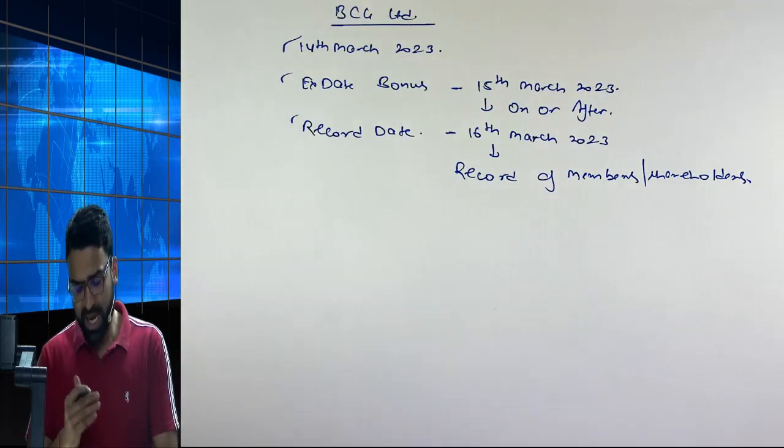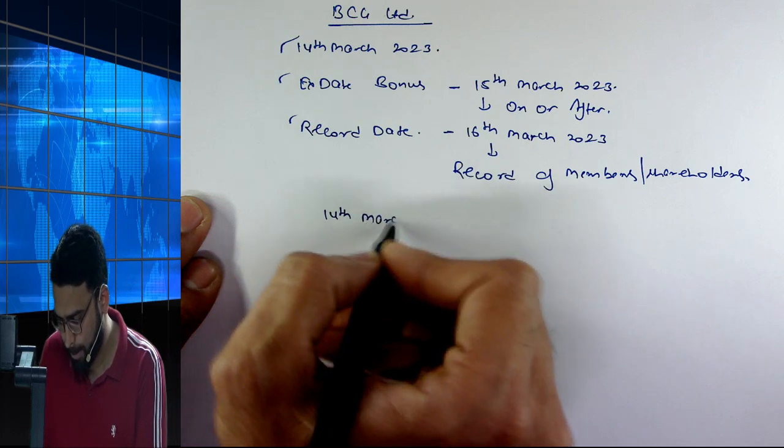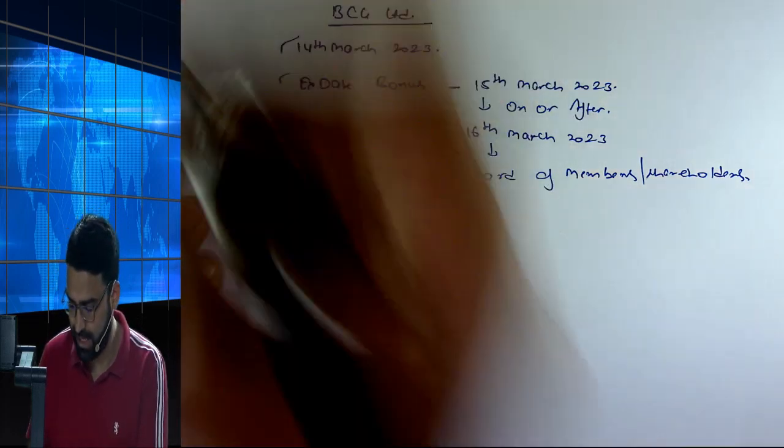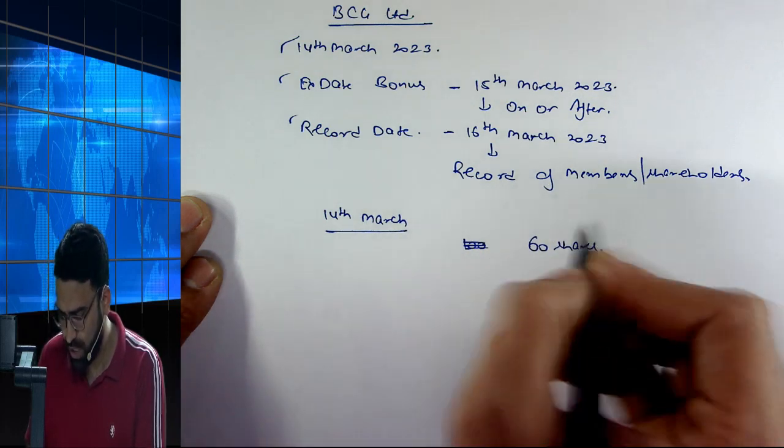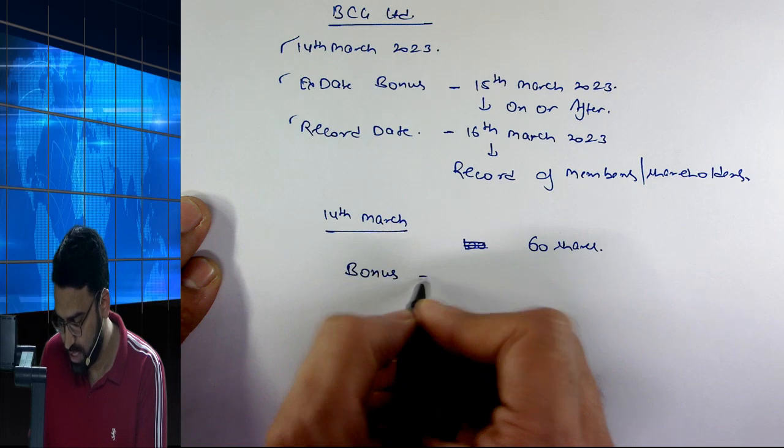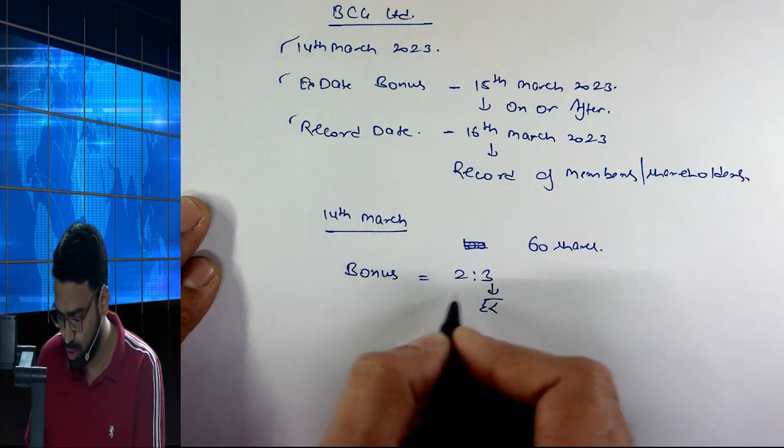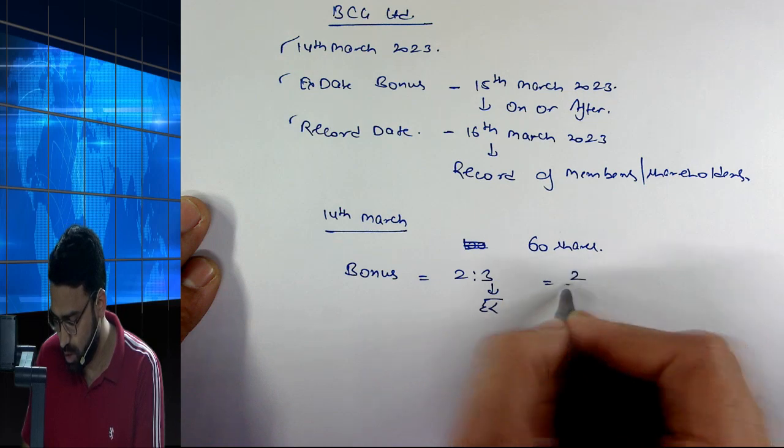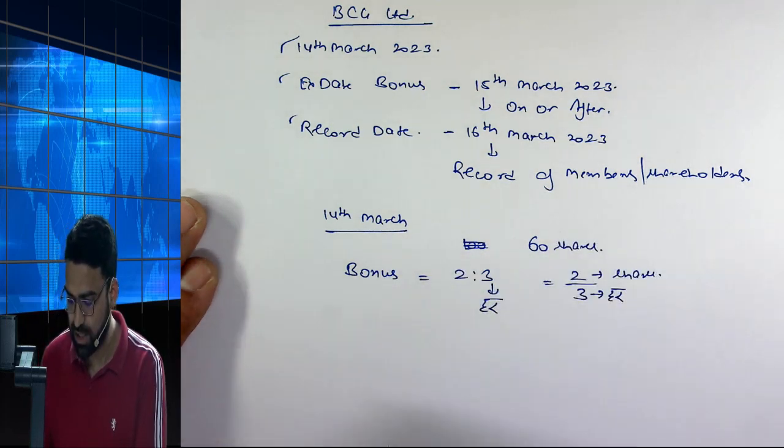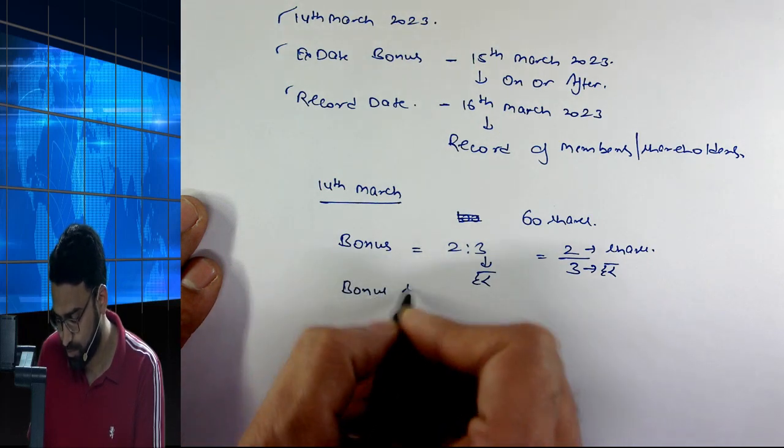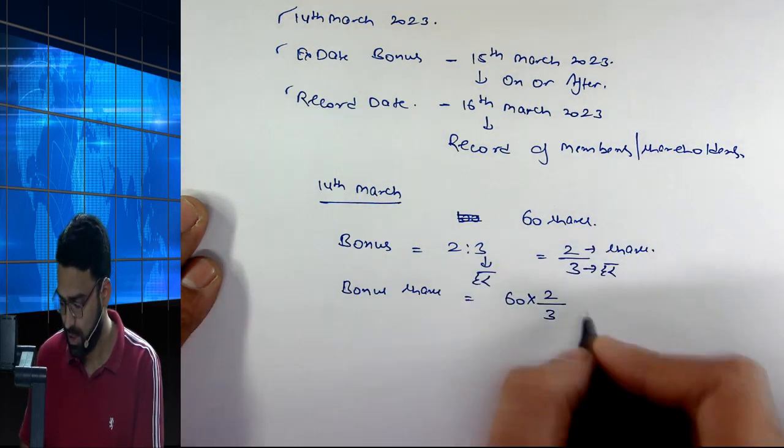Now when price adjustment happens, I want to explain this so you understand it. Suppose on March 14th I have 60 shares. I was holding 60 shares of BCG Limited. And the company said that we will give a bonus of 2 to 3. This is how it works - if you have shares of BCG, the bonus is 2 by 3. If I have 60 shares, I will get bonus shares. For each 3 shares you have, multiply by 2. So this gives 40 shares.